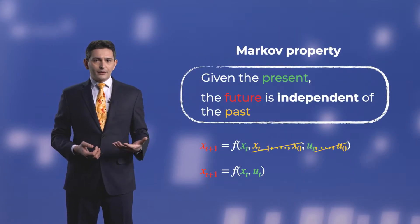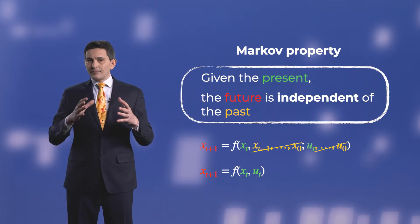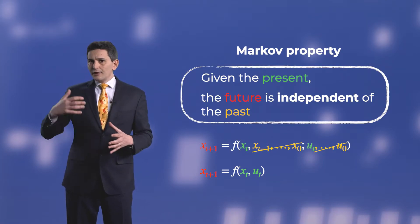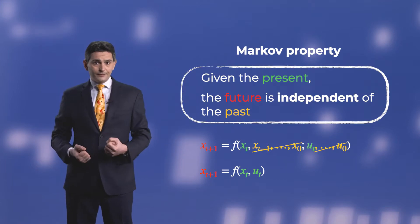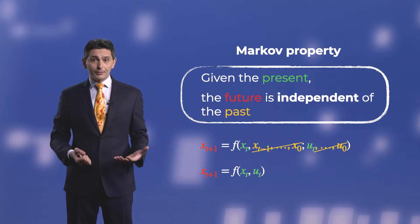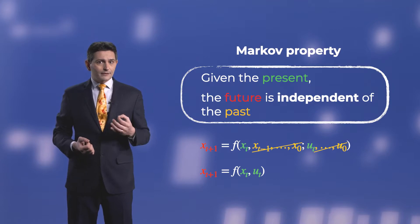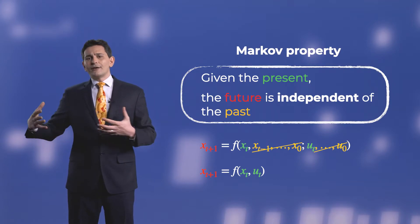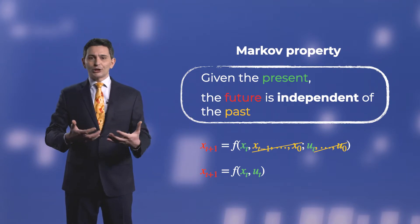Good choices of state are such that, given the present information, the future state is independent of the past. This is called the Markov property, and is very desirable because it allows the robot not to have to keep track of all the information gathered in the past.